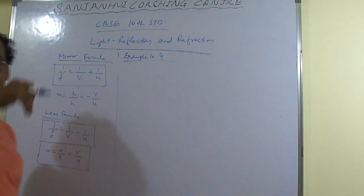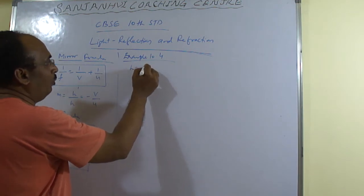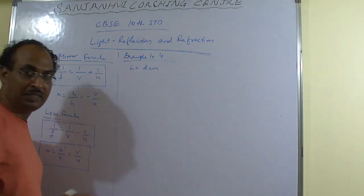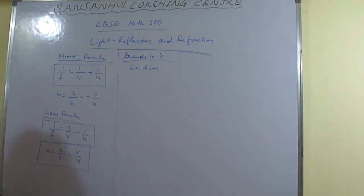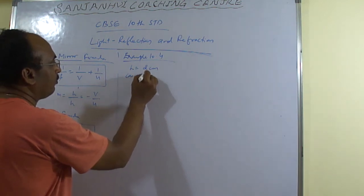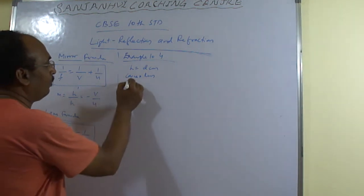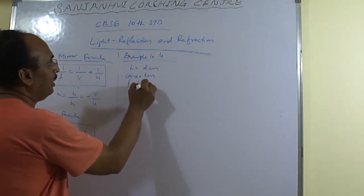In this question is given to you a 2 cm tall object. So height of the object is given to you as 2 cm tall. Object is placed perpendicular to the principal axis of a convex lens. So here type of lens is convex lens. Convex lens of focal length 10 cm. So focal length f is equal to 10 cm.